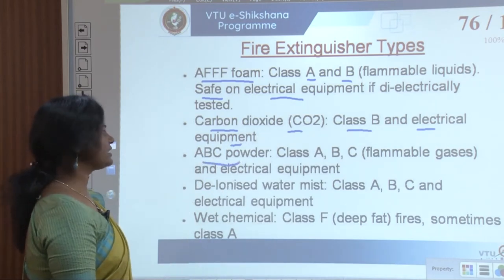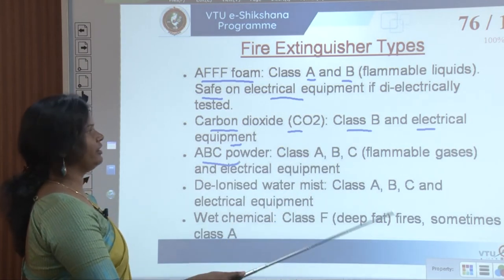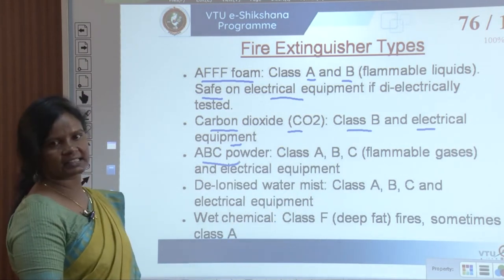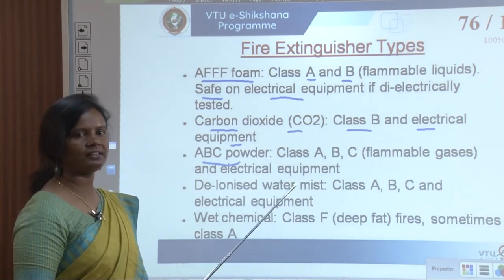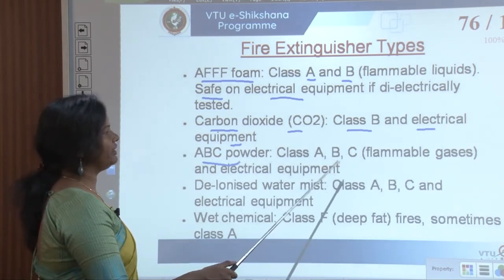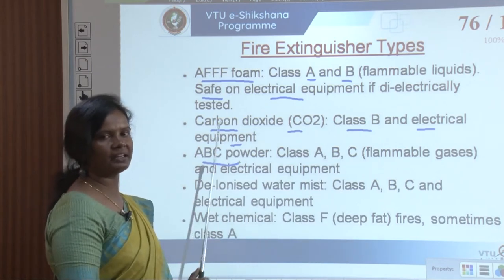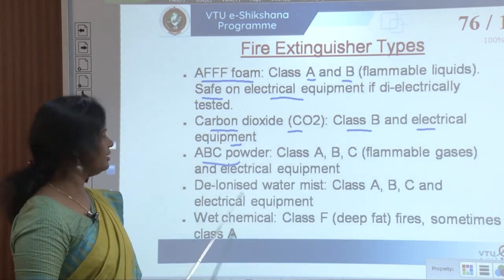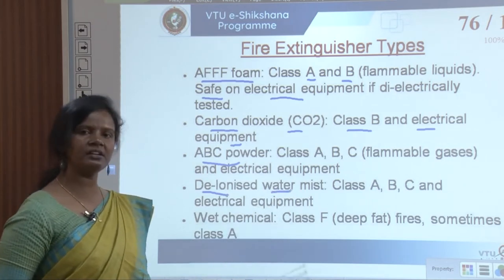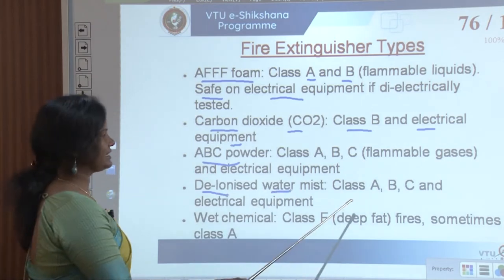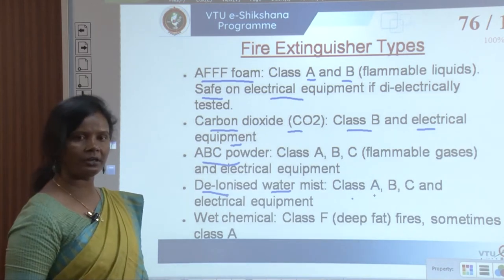ABC powder extinguisher addresses Class A, B, and C fires — flammable gases and electrical equipment. Deionized water mist can address Class A, B, C, and electrical equipment fires in total. Wet chemical extinguishers address Class F deep fat fires, and sometimes Class A as well.